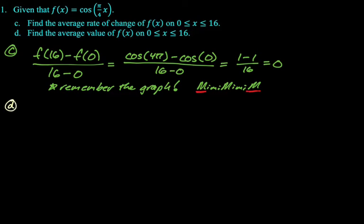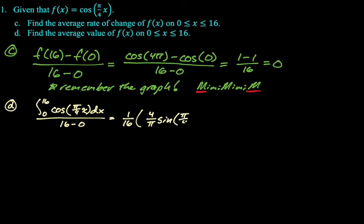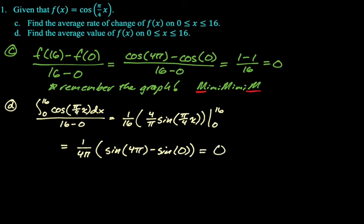And then average value has basically the same problem. Average value is going to be the integral divided by the interval. So we're going from 0 to 16 of our function. And then we're going to divide by 16 minus 0, so integral divided by interval. Never forget that. So this is going to be 1 over 16. I see a lot of people forget that. And then there would have been a pi over 4 on the inside, so there's a 4 over pi on the outside. And then we'll get a sine of pi over 4x. And we're going to go from 0 to 16. This answer is also going to be 0, because we're going to end up with 1 over 4 pi. And then you get the sine of 4 pi minus the sine of 0. But the sine of 4 pi and the sine of 0 are both 0. So we're just getting 0 again.